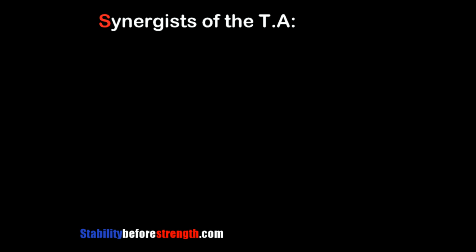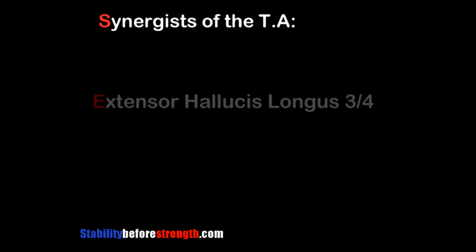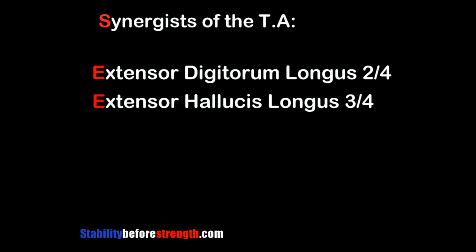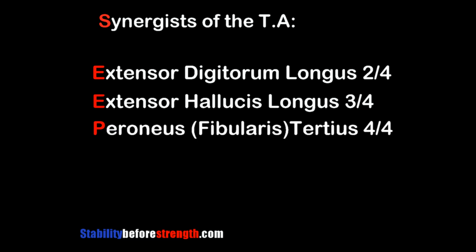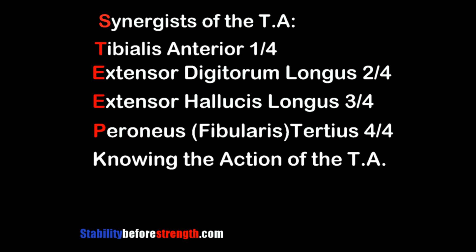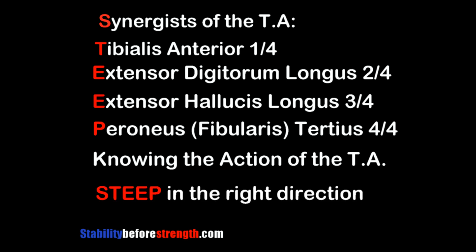Synergists — muscles that help perform the same action as the tibialis anterior — include the extensor hallucis longus, the extensor digitorum longus, and the peroneus tertius, which also assists in dorsiflexion. Knowing the action of the tibialis anterior is a step in the right direction.